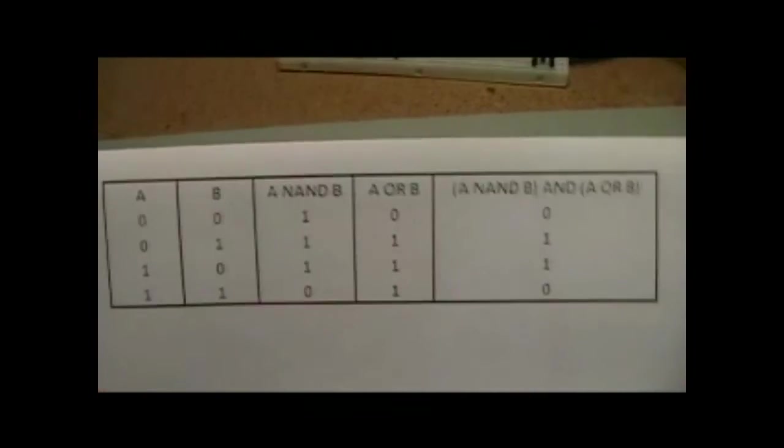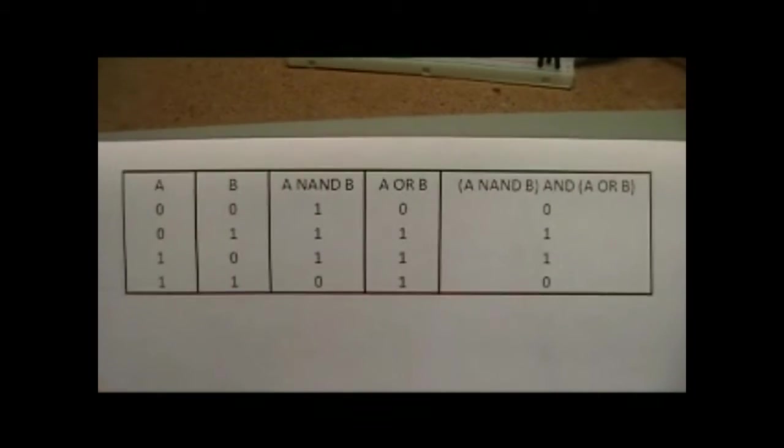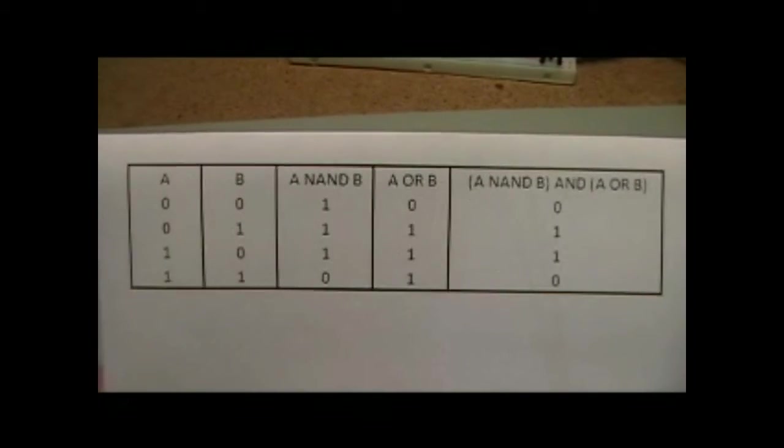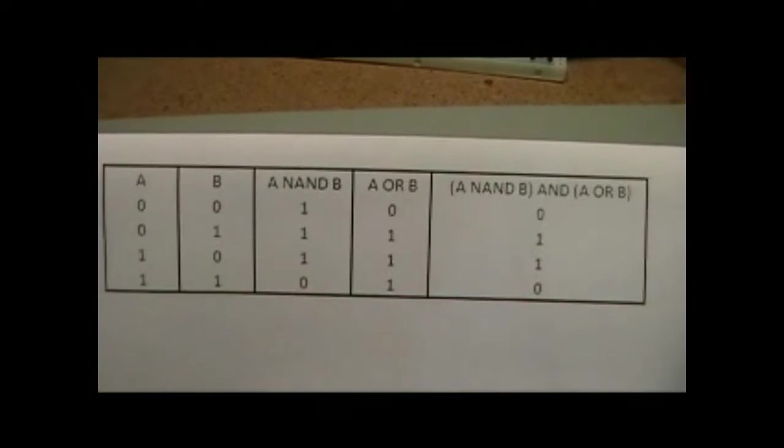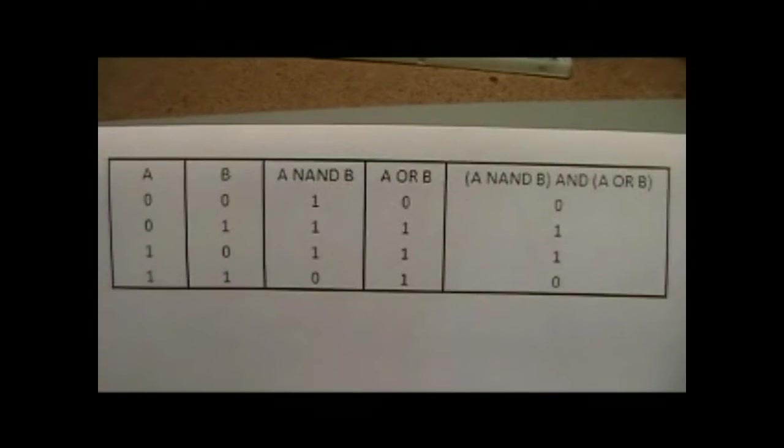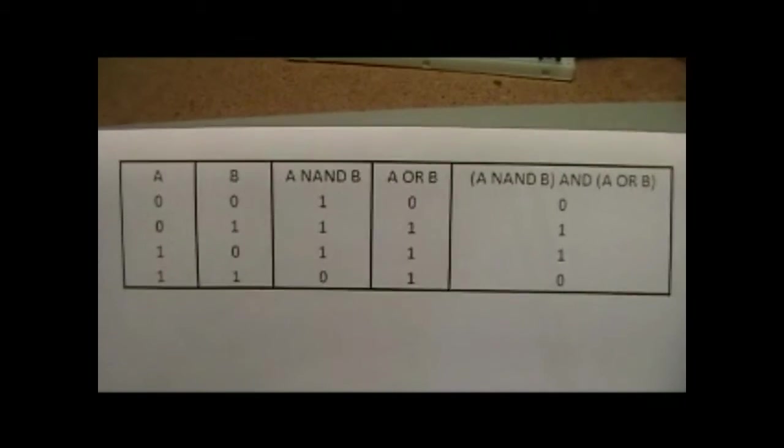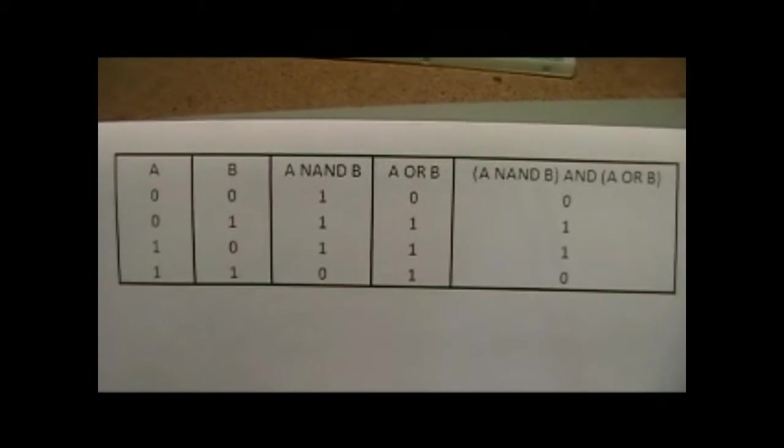So over on the left you'll see my A inputs and my B inputs. So we've got all four combinations of those two possible inputs. The next column A NAND B actually is the output of NANDing A and B together. And you'll notice you get ones any time both of them are not on.